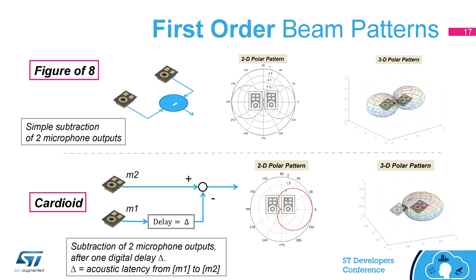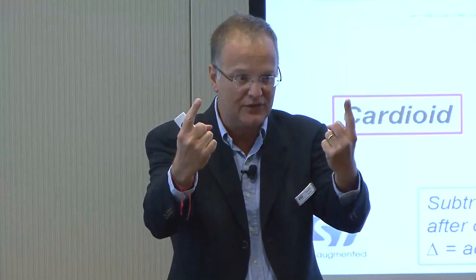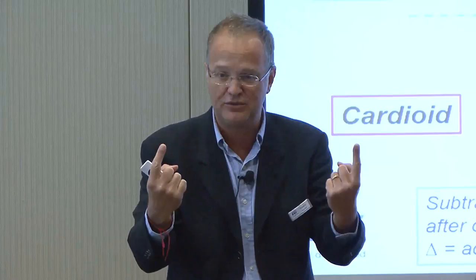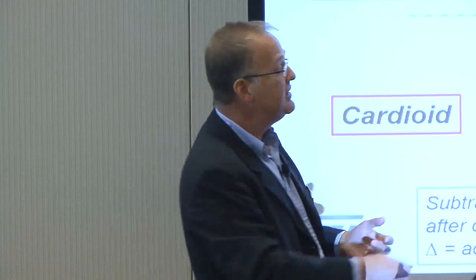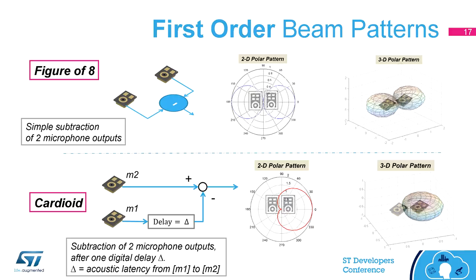If you connect the output of two microphones and subtract the output, you get what is called a figure-of-eight polar pattern. If a speaker is in front of two microphones at the same distance from each, and you subtract, you get zero output. But if the speaker is closer to one of the microphones, the output is not zero. This is part of a signal processing routine implementing this polar pattern, where all sound coming from the axis of the two microphones is eliminated, and all sound coming from the other axis is captured.